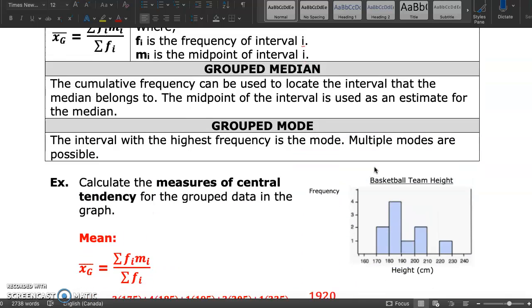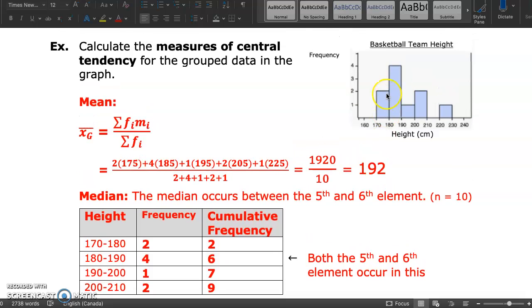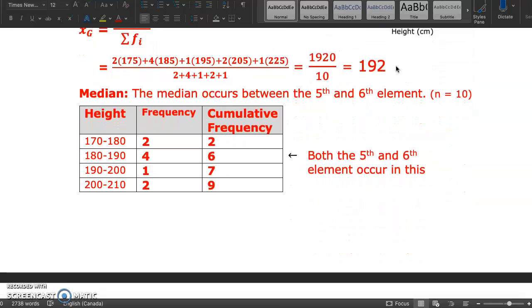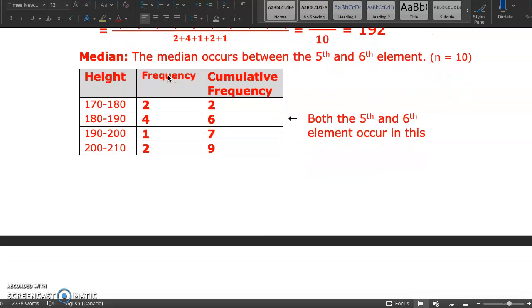Next, the grouped median. We are treating these midpoints as if they were the actual values in the set. So we can arrange them from least to greatest and find the middle. If we were to write out 175, 175, 185, 185, 185, 185. But there is another way of doing this, which is more convenient.